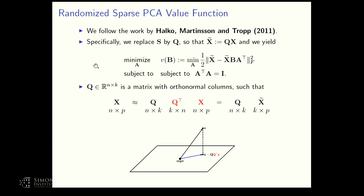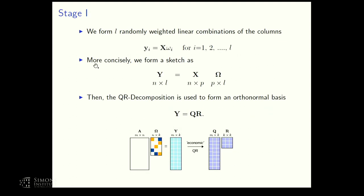Following the work by Halko, Martinsson, and Tropp, we replace S by Q, where Q is a basis that approximates the column space of the input matrix X. We form randomly weighted linear combinations of the columns to create a sketch, then compute the QR decomposition to get an orthonormal basis. We also do oversampling, choosing L a little larger than the desired target rank K.